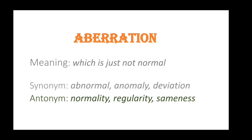Next word: aberration. Meaning: something which is just not normal, a deviation from what is normal. Synonyms: abnormal, anomaly, deviation. Antonyms: normality, regularity, sameness.